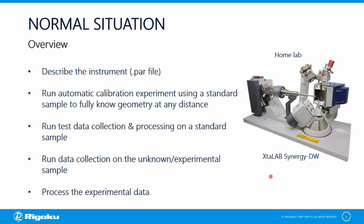First, let's talk about the normal situation for using CrysAlis Pro for data in the home lab. You're going to describe the instrument fully in the PAR file, run an automatic calibration experiment using a standard sample, and fully know the geometry of the system at any distance. Then you'll run a test data collection and processing on that standard sample — the whole geometry of the system will be totally worked out. Then you can run data collection on the unknown experimental sample, where that's the only variable, and process that data.